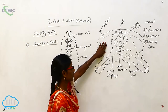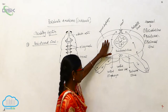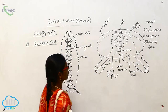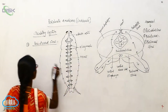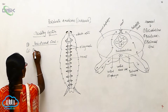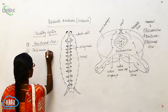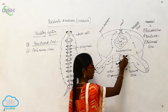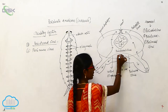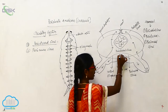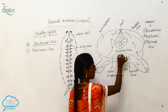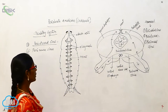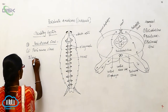The perivisceral sinus is a large region compared to the perineural sinus and pericardial sinus. The perineural sinus consists of the nerves, including the ventral nerve cord, that's why it is called perineural sinus.